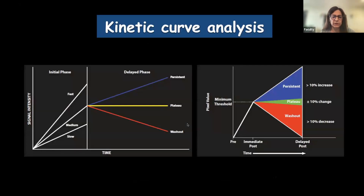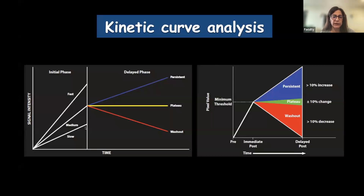Next we have the kinetic curves. After acquiring the dynamic contrast images, we divide contrast enhancement into two phases: the initial phase, which is the first two minutes, and the delayed phase, which is two to six minutes. In the initial phase, you can have slow, medium, or fast enhancement. Slow means the lesion enhances less than 50% compared to pre-contrast; medium is between 50 and 100%; and fast is more than 100%. Fast enhancement is associated with malignancy, while medium and slow are normally seen in benign conditions — though there are exceptions, which I'll show in my talk.